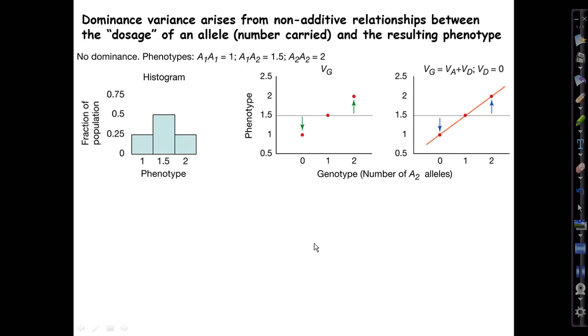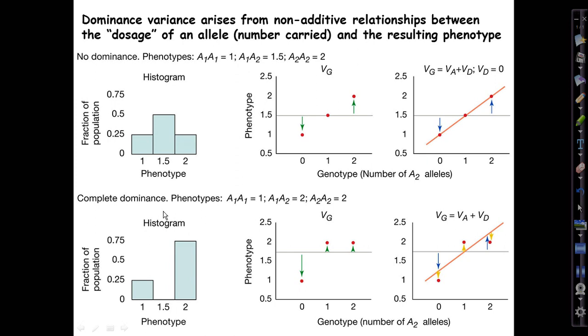Here's another set of textbook diagrams from Herron and Freeman. First, a no-dominance locus with phenotypes: A1-A1 have a phenotype of 1, A1-A2 have 1.5, and A2-A2 have a phenotype of 2. Dosage of A2 alleles—0, 1, or 2—maps directly and linearly, that is additively, onto phenotypes of 1, 1.5, and 2. The genetic variance is all additive; the dominance variance is zero. The phenotypes are predicted in an additive manner by allele dosage.